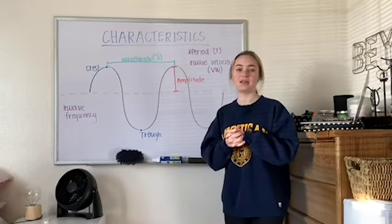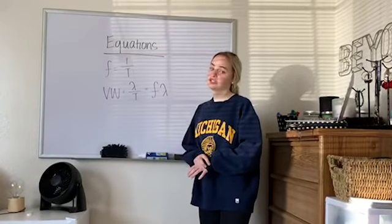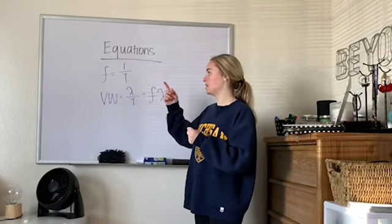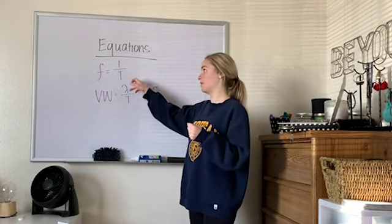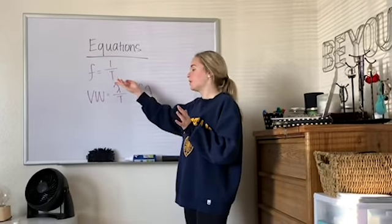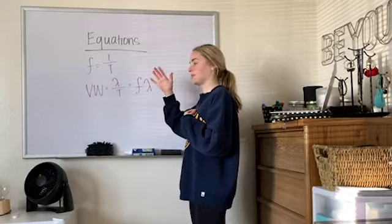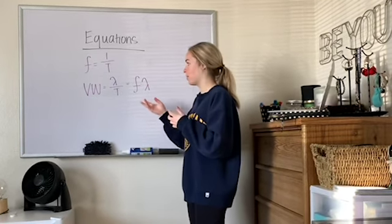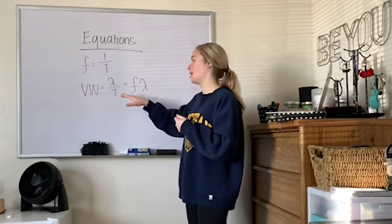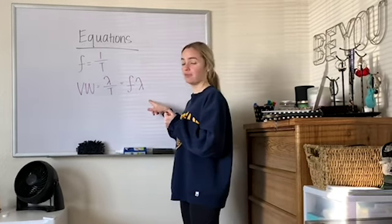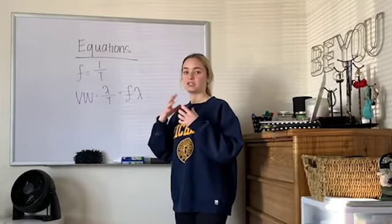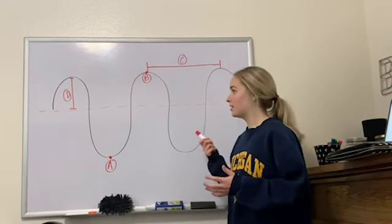Here are some equations to determine the numerical values of those characteristics. Frequency equals one over the period, so given one you can solve for the other — frequency is just the reciprocal of the period. For wave velocity, you have two equations: wavelength divided by period, and frequency times wavelength. Given any of these values, you can plug them in and solve for the missing variable.